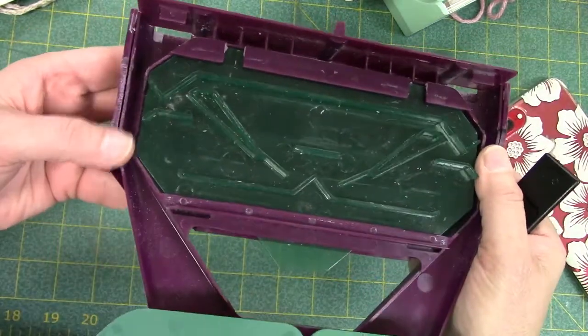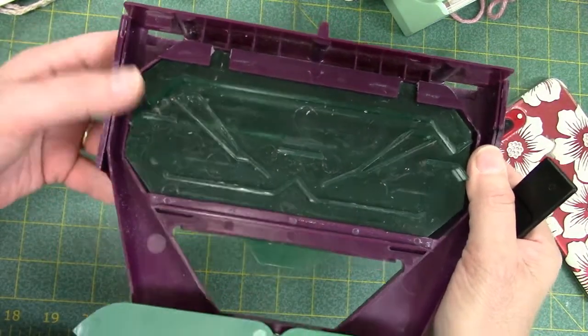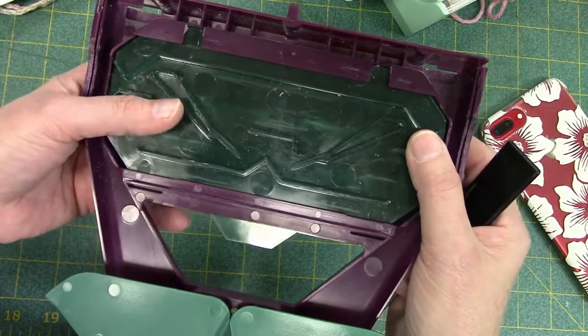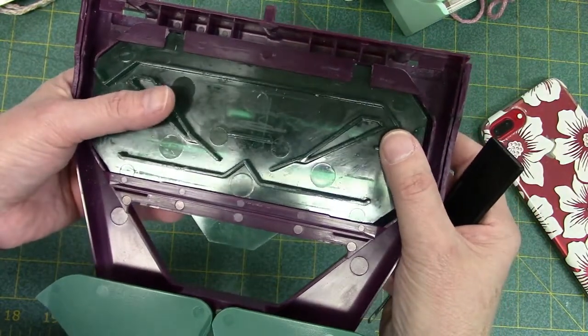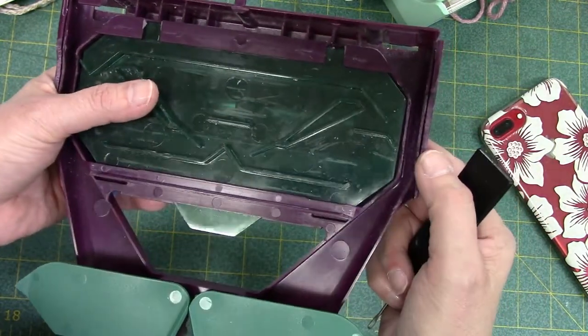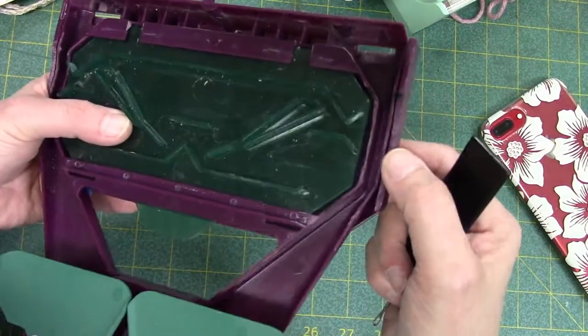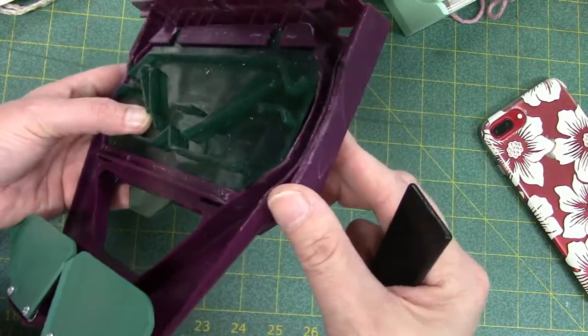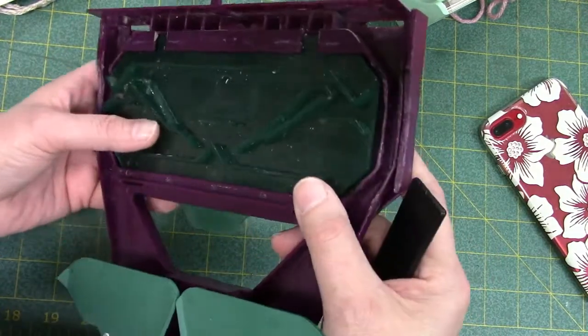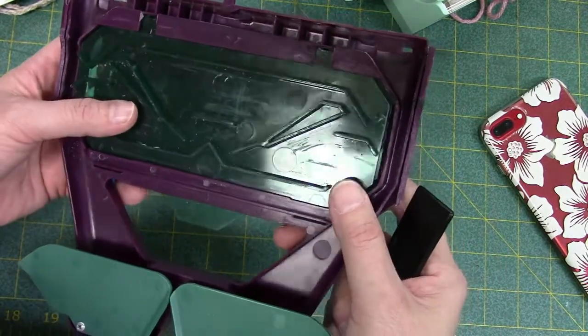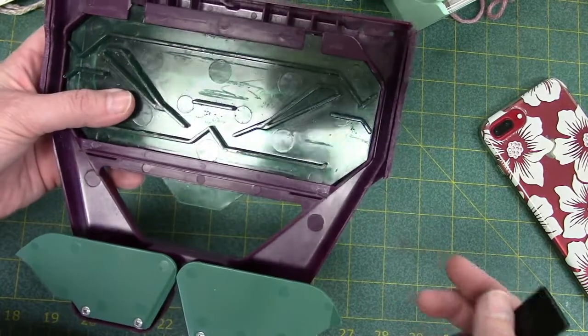So after talking to the company and them sending me out several carriages that wouldn't work, they told me that they had a defective batch. And so I decided to go ahead and just try to fix it. And this works pretty well. So I'm going to put it on the machine so I can show you how I modified it.